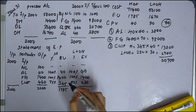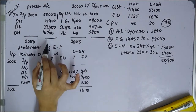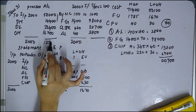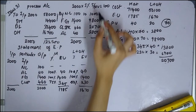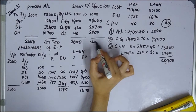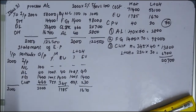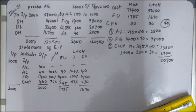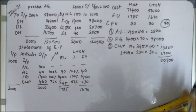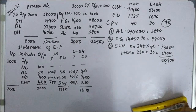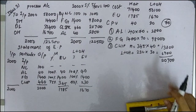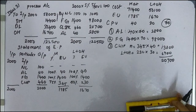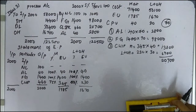Total process account: 1,22,500. Abnormal loss 2,800, finished goods 98,000, closing stock 20,700, giving a total of 1,21,500 — with a balancing difference of 3,500.